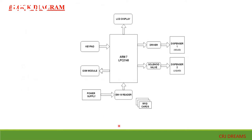This is the block diagram of the Smart Ration Distribution System. The ARM7 LPC2148 is used as the main microcontroller; it acts as a CPU for controlling different functions of the project. An LCD display is used to display the names of the commodities and to guide the consumer. A hex keypad is used to give instructions to the system.